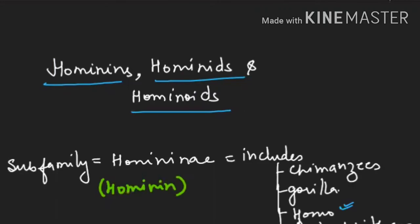When we are discussing the subfamily level, we will say we are homonin because it includes homo genera along with chimpanzee, gorilla, australopithecus and paranthropus. Now see next.